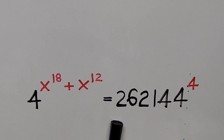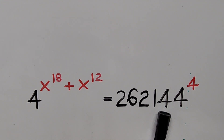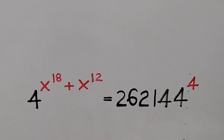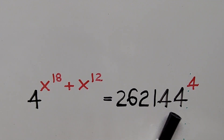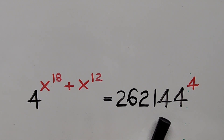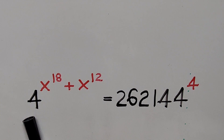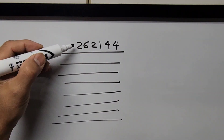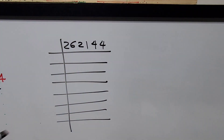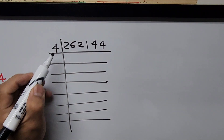First we focus our attention on the right-hand side of the equation. This is an enormous number, and if you notice the last two digits taken two digits at a time is divisible by four. So we'll be extracting the factors of this number by dividing by four, to see if we can convert it with base four, as on the left-hand side of the equation.